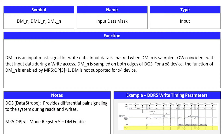The input data mask signal is an input signal. Its symbols are DMN, DMUN, and DMLN. DMN is an input mask signal for write data. Input data is masked when DMN is sampled low coincident with that input data during a write access. DMN is sampled on both edges of DQS. For a BI8 device, the function of DMN is enabled by Mode Register 5, DM Enable. Note that DM is not supported for BI4 devices.